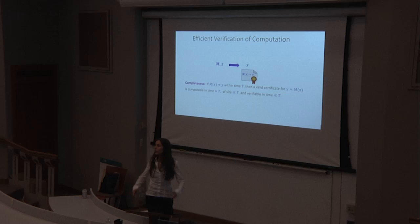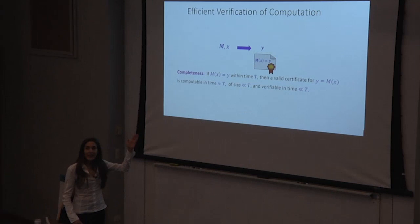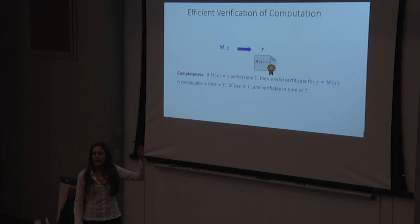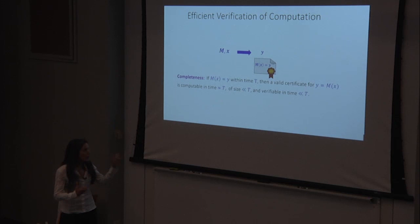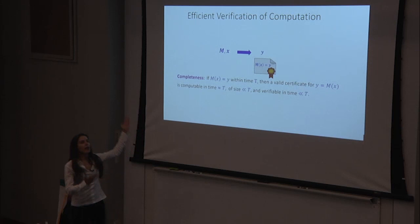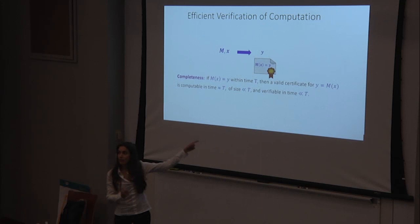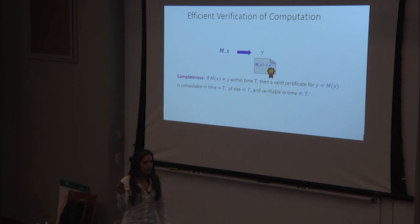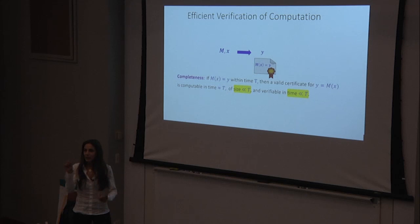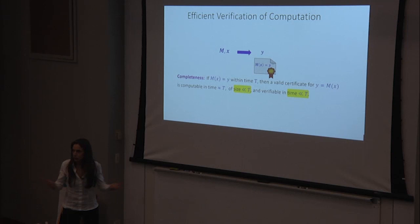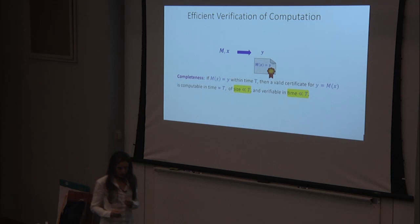Formally, the scheme is defined by two properties. The first is completeness: if Y is the correct output computed within T time steps, one should be able to efficiently compute Y along with the certificate without too much overhead. Crucially, the size of the certificate and the time to verify it should be much smaller than T — if it takes time T to verify, we don't need the certificate at all.